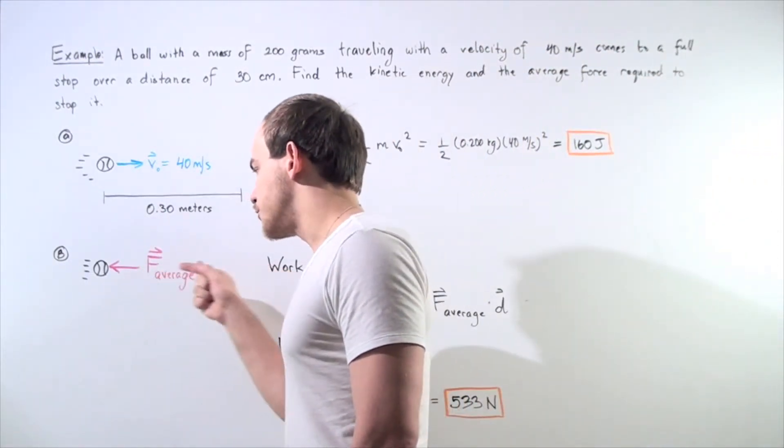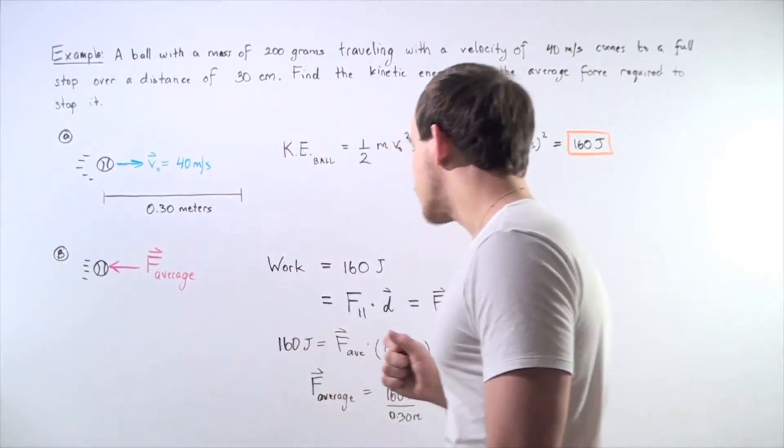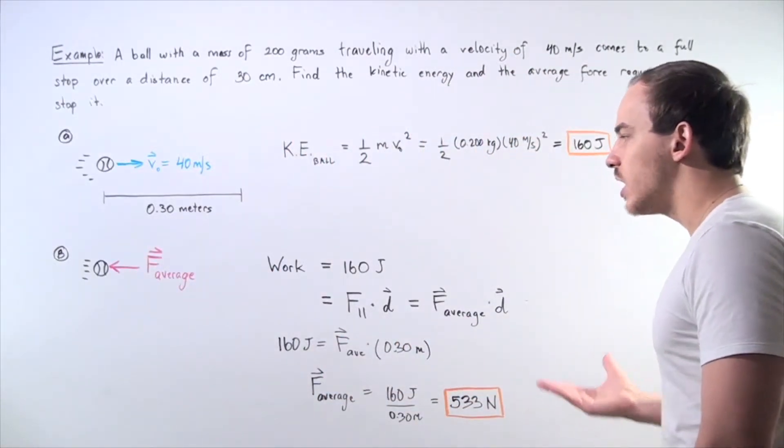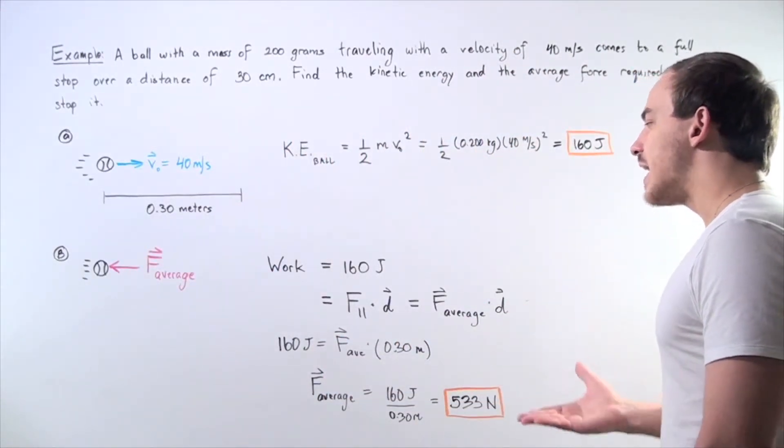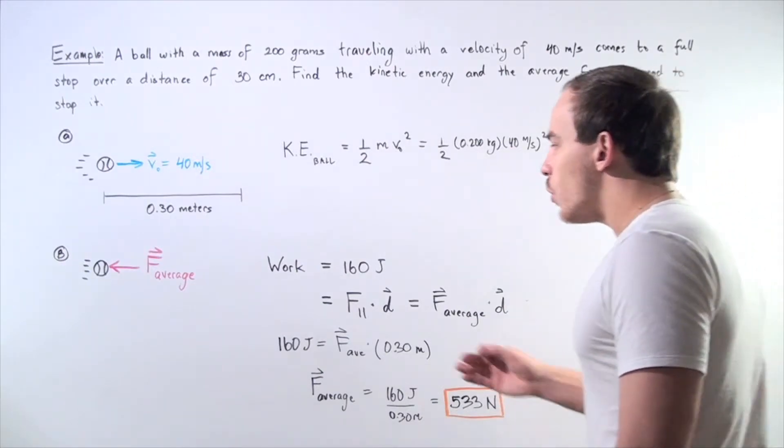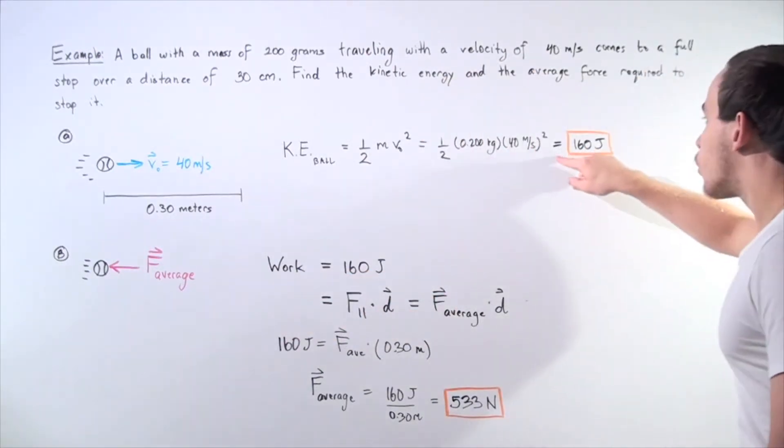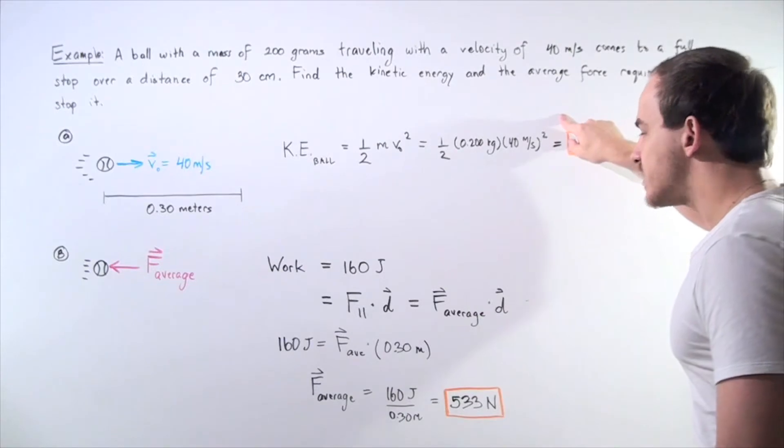In step B, to find the average force acting on the object, we simply use our formula: work equals force times displacement. We know the work, this is how much work we must do on the object to make it stop.